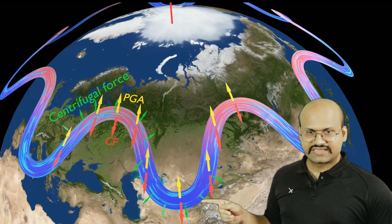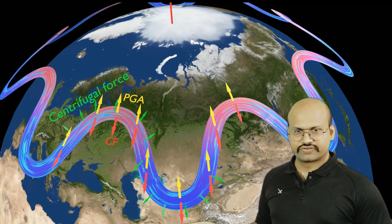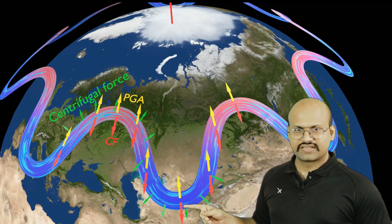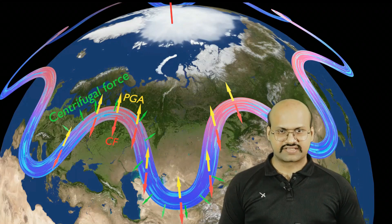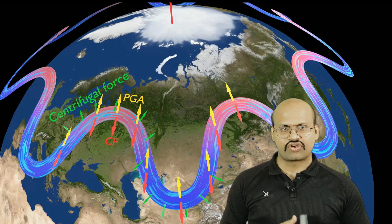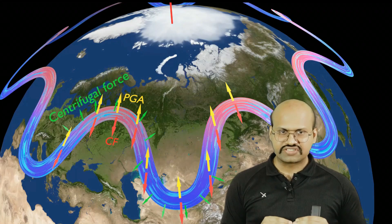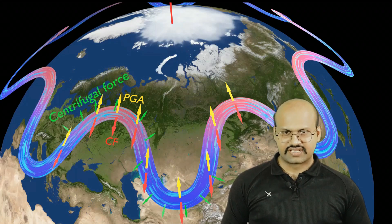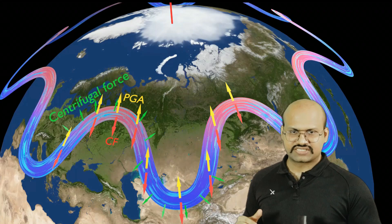Similarly, when we take this other curvature, we see that the centrifugal force acts along with the Coriolis force. Now these two forces together are higher than the pressure gradient force, and the only way to balance them is by decreasing Coriolis force. Coriolis force can decrease only if the velocity of the stream decreases. Therefore, the air at this part of the jet stream is moving at a much lesser velocity compared to other parts.